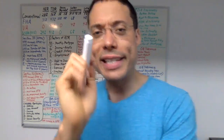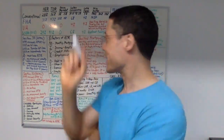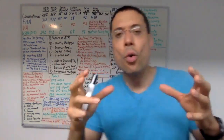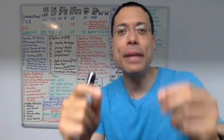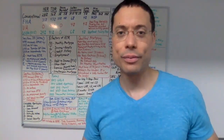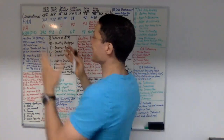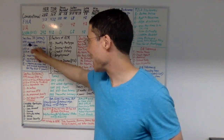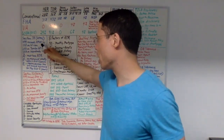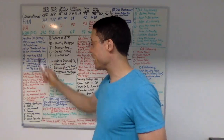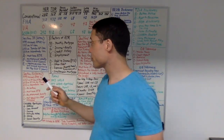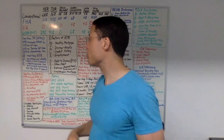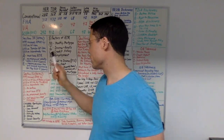What are Section 35 loans? Section 35 loans are high-priced mortgage loans. A loan is considered a Section 35 loan when the APR exceeds the APOR by 1.5% on a first lien, 2.5% on a jumbo first lien, or 3.5% on a subordinate lien.